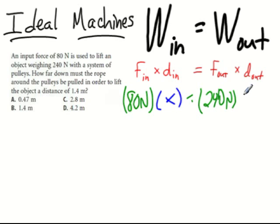We don't know how much we have to pull, so our input distance is going to be X, and our output distance is 1.4 meters. In this case, we'll divide both sides by 80 newtons.